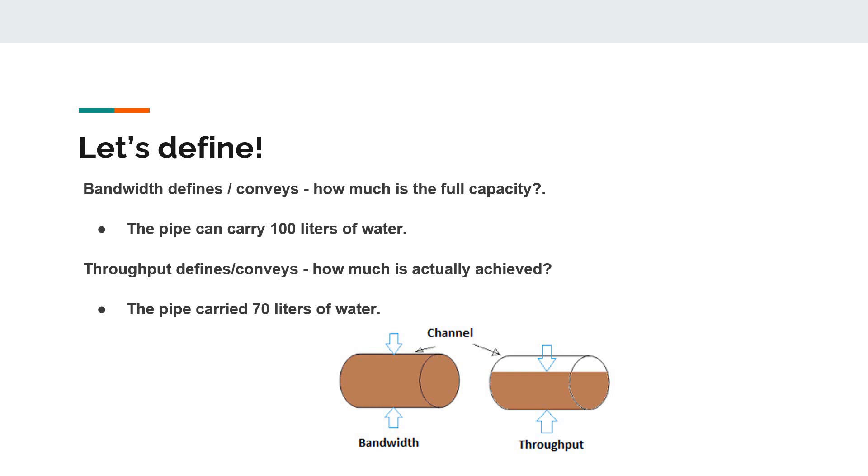Let's first define what is bandwidth. Bandwidth is all about the capacity. What is the full capacity is called bandwidth, and how much is actually achieved is called throughput. For example, I have taken a pipe or bucket here whose bandwidth is specified as 100 liters, which means it can maximum hold 100 liters, but the pipe carried only 70 liters. That's called throughput.